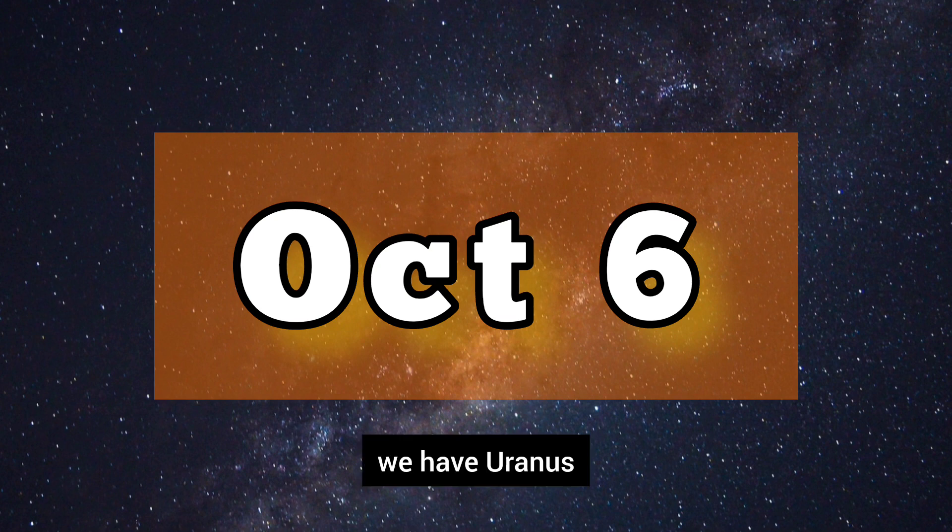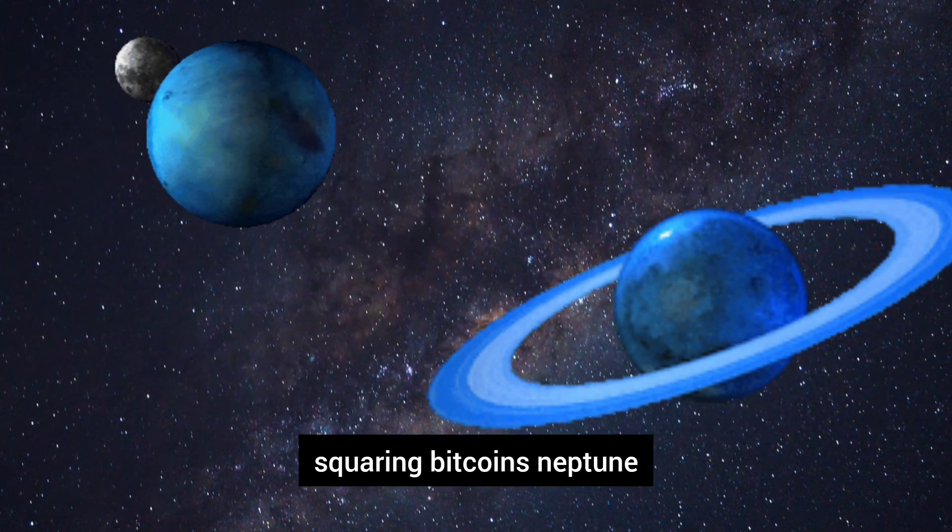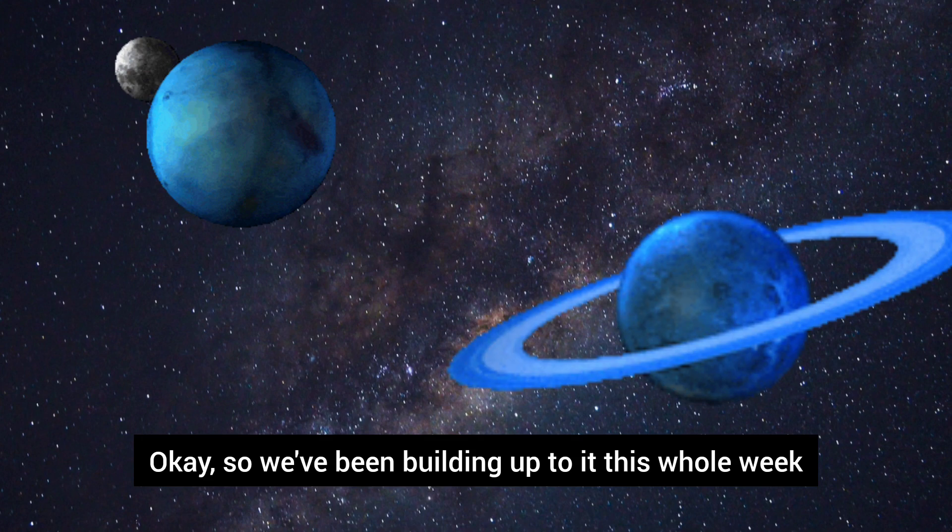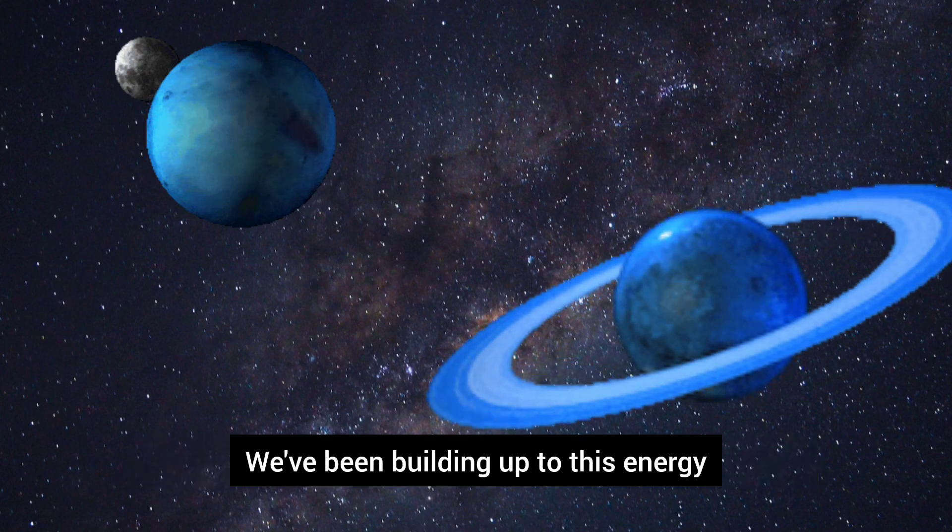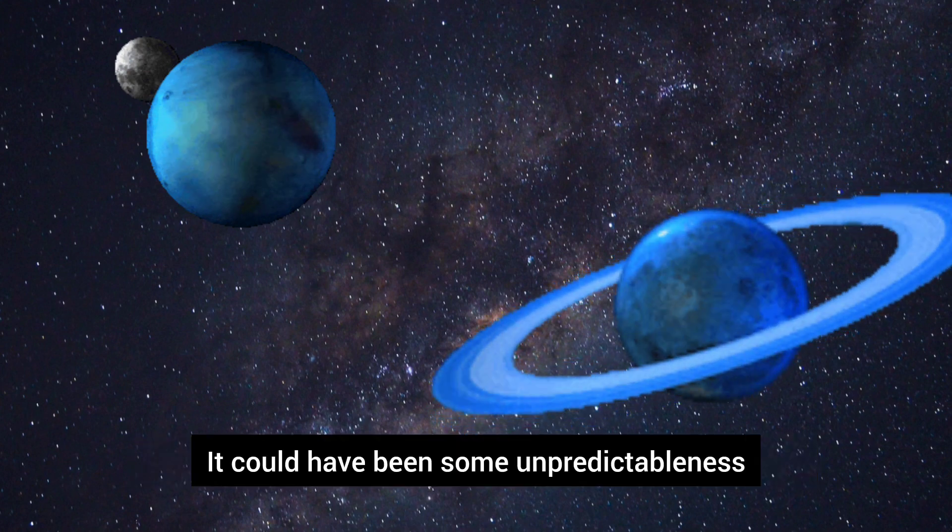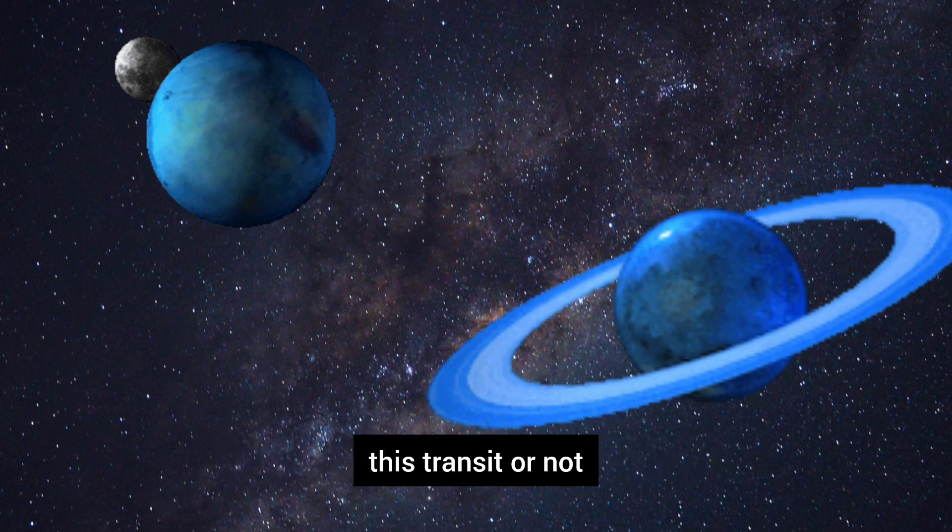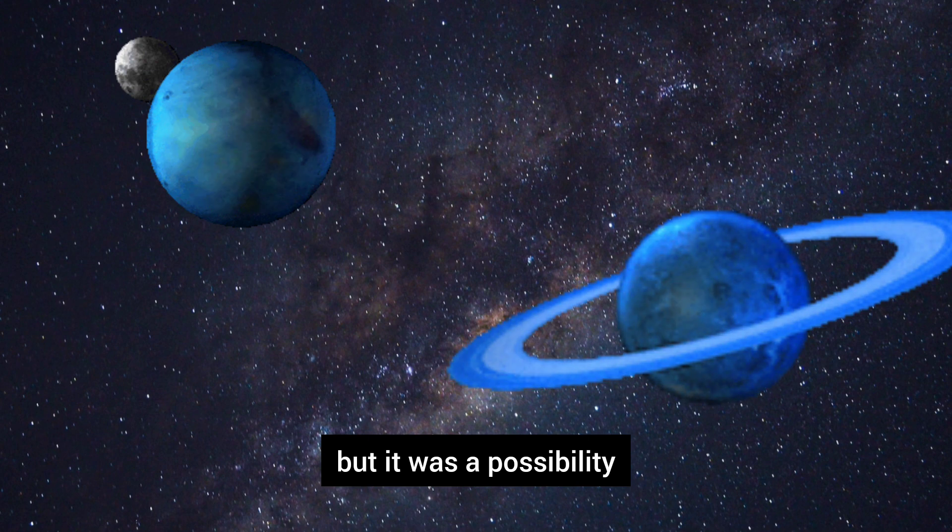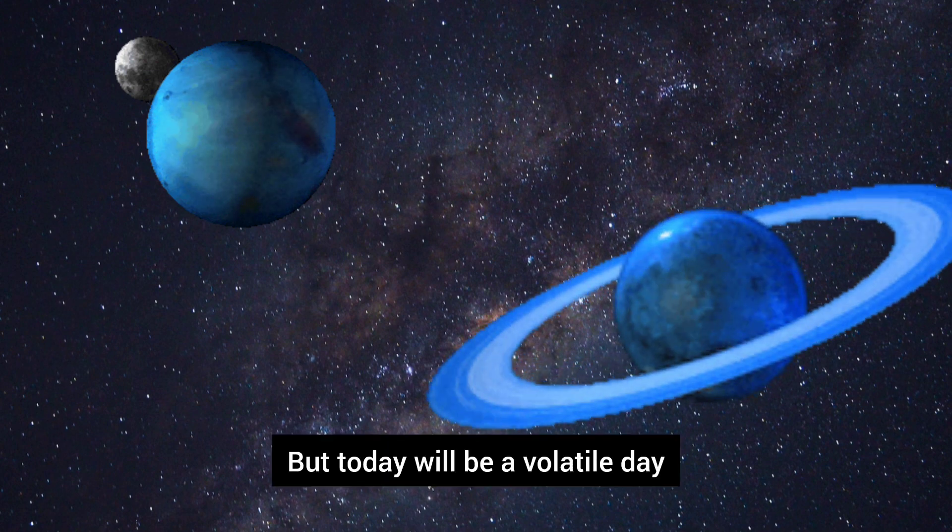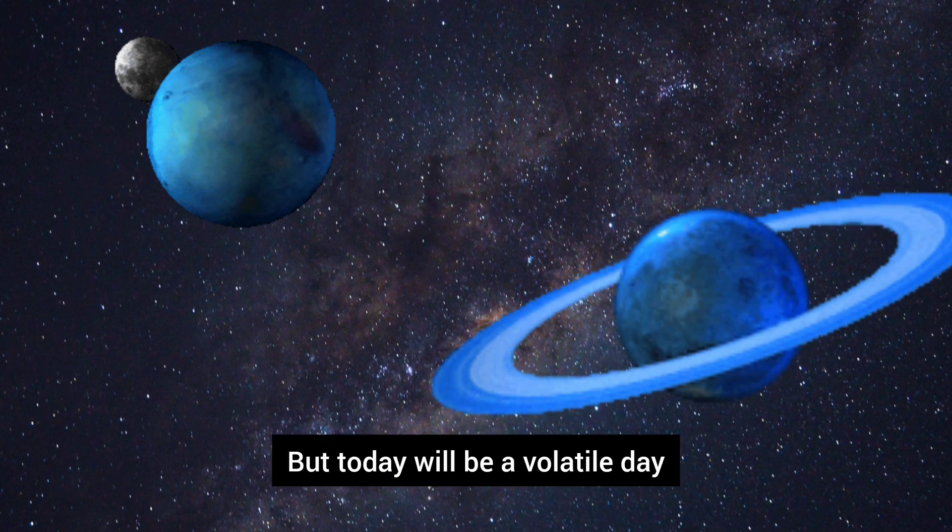October the 6th we have Uranus squaring Bitcoin's Neptune. So we've been building up to it. This whole week we've been building up to this energy. There could have been some unpredictableness in the very beginning of the week due to this transit, but today will be a volatile day.